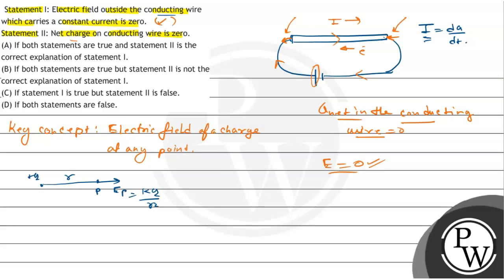Statement two is saying that net charge on the conducting wire is zero. We discussed that as much charge enters the conducting wire, the same charge is brought outside the conducting wire, because we know that charge in the conducting wire cannot be created or destroyed.